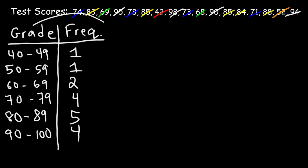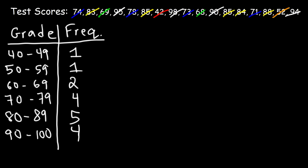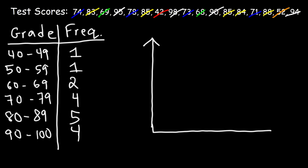This is our frequency distribution table. Once we have that set up, we can construct the histogram. The histogram looks like a bar graph, but the only difference is that the bars are attached to each other — there are no spaces between the bars.